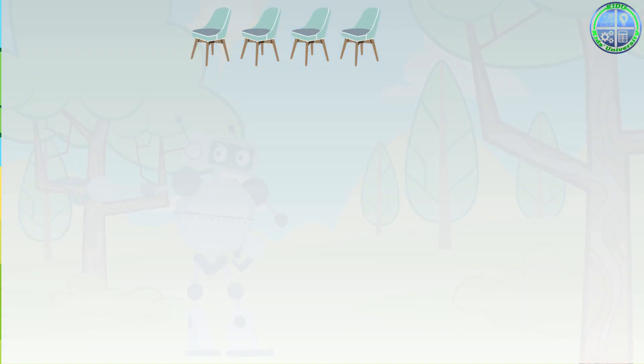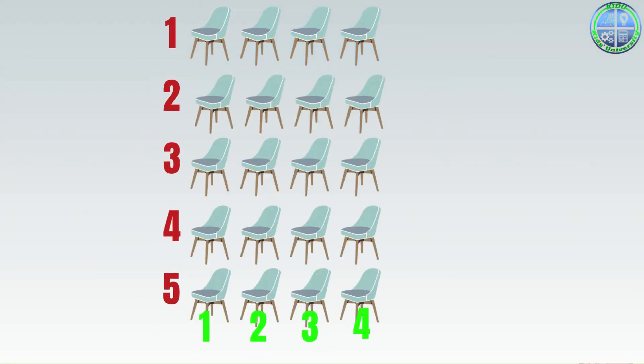There's multiplication, which is like speedy addition. It's adding the same number many times. For example, if you have five rows of chairs and four chairs in each row, you have five times four, which is 20 chairs.